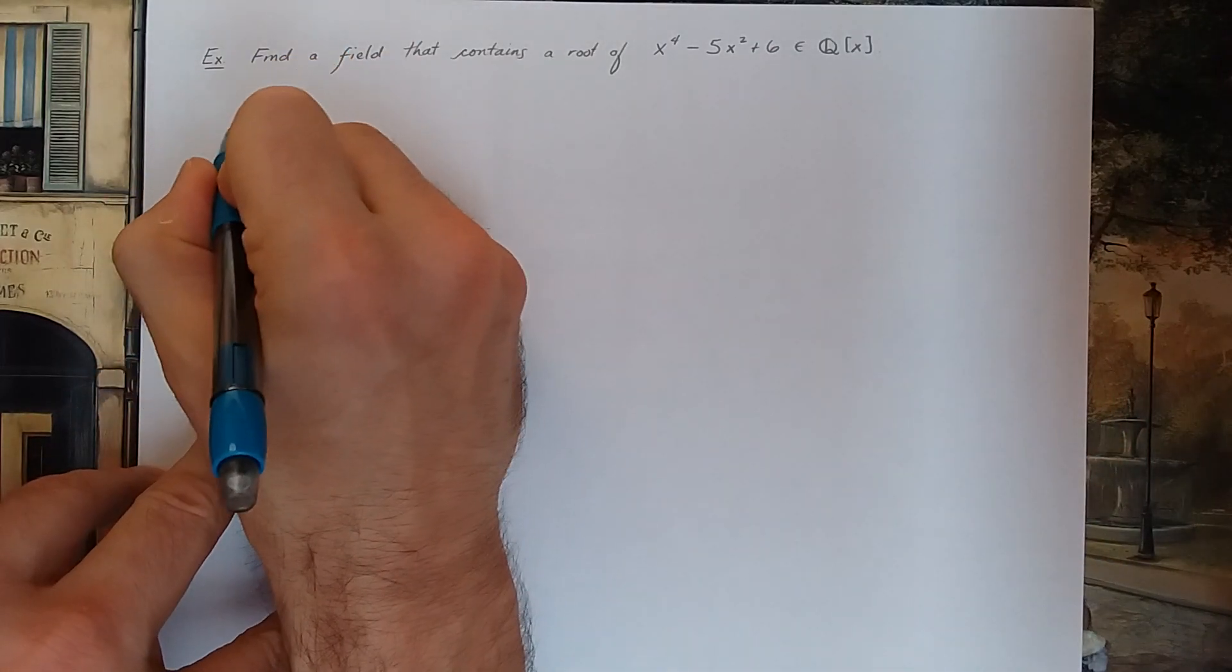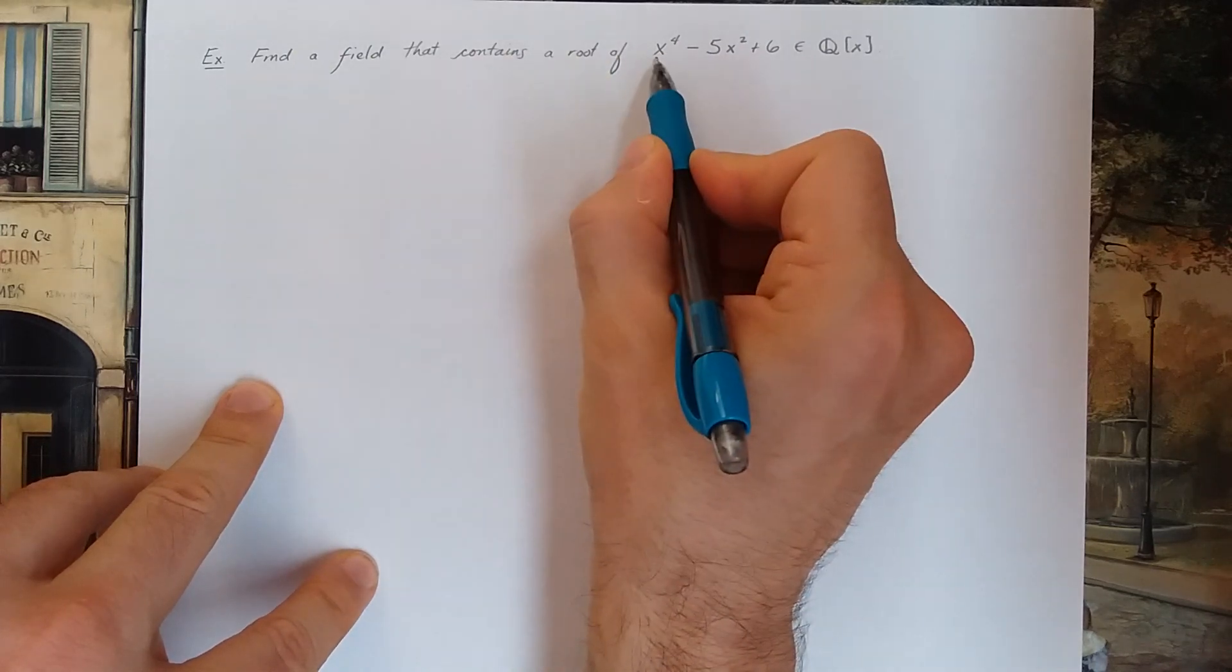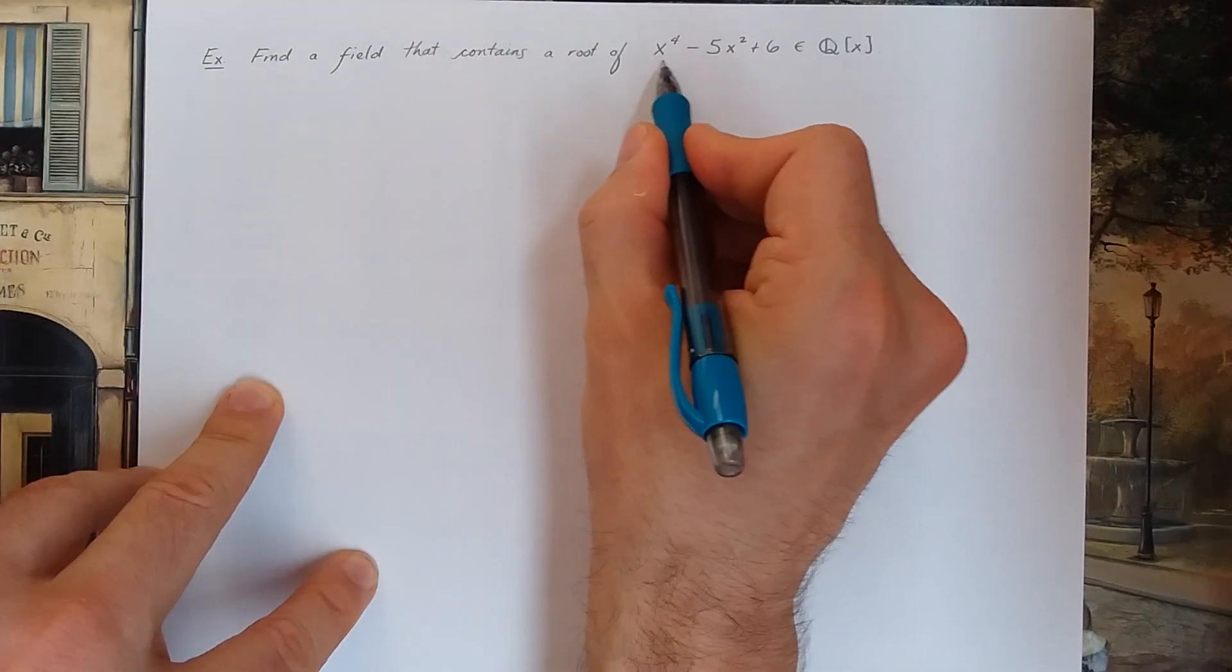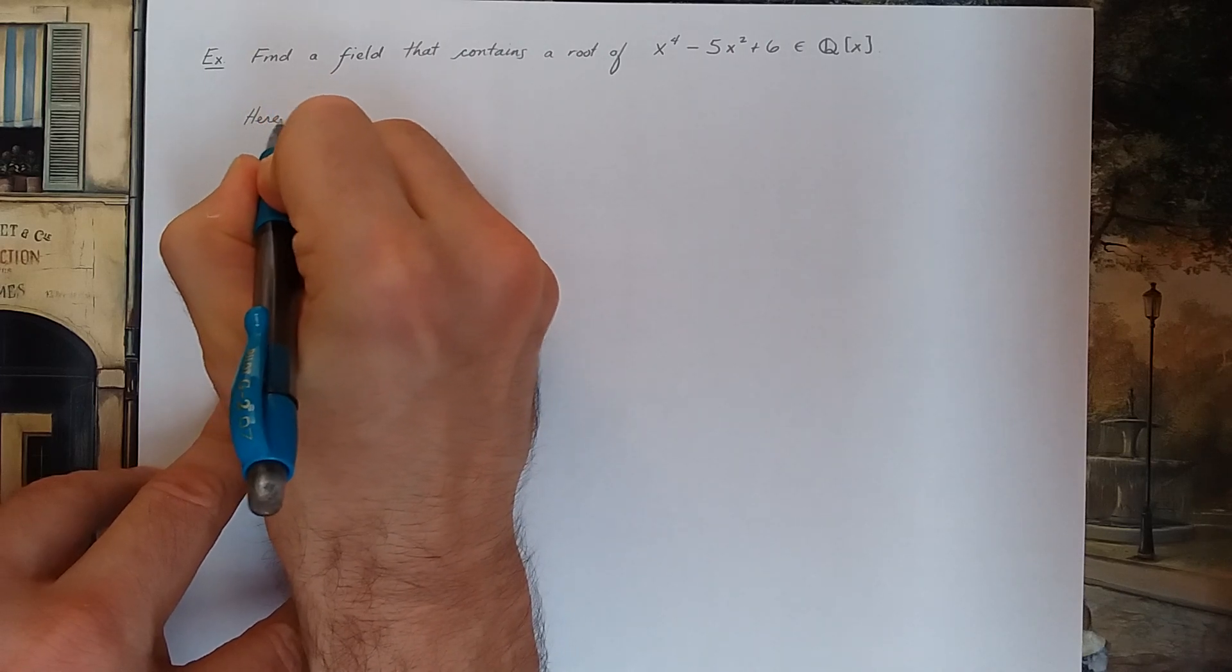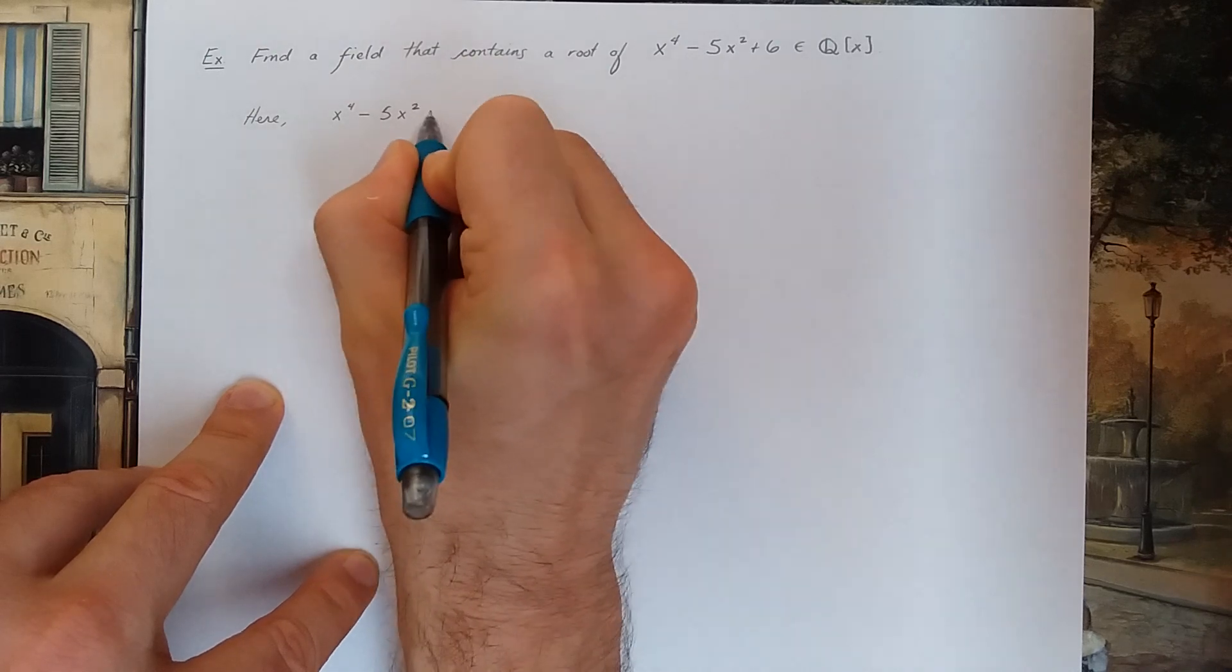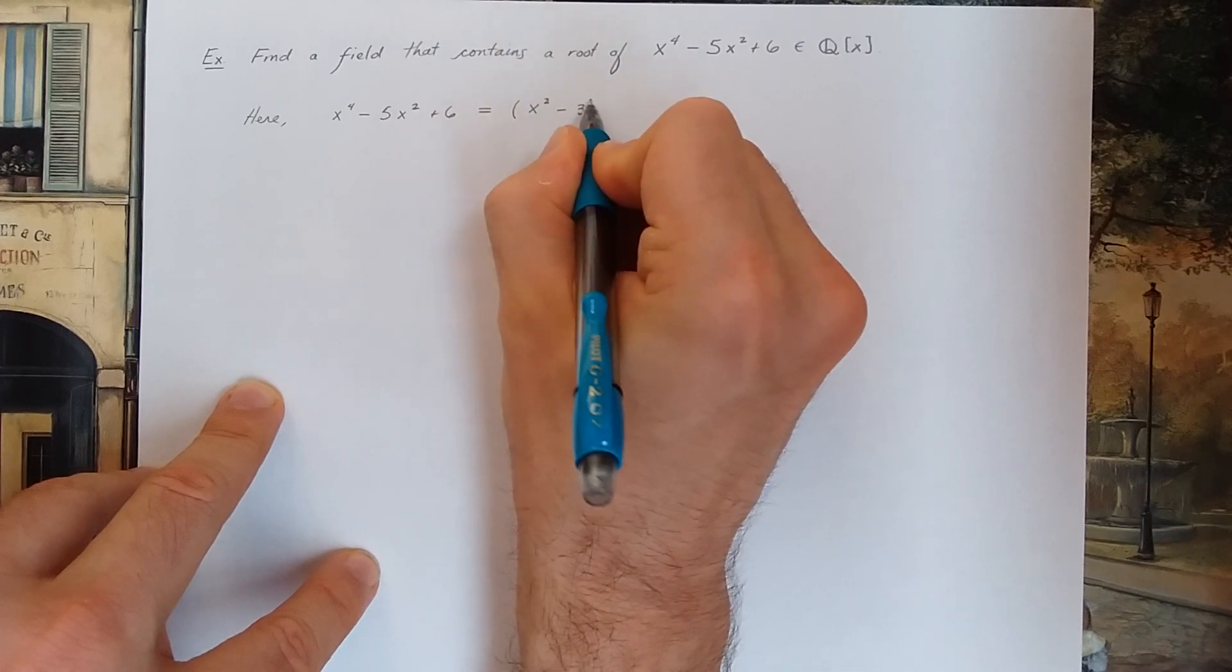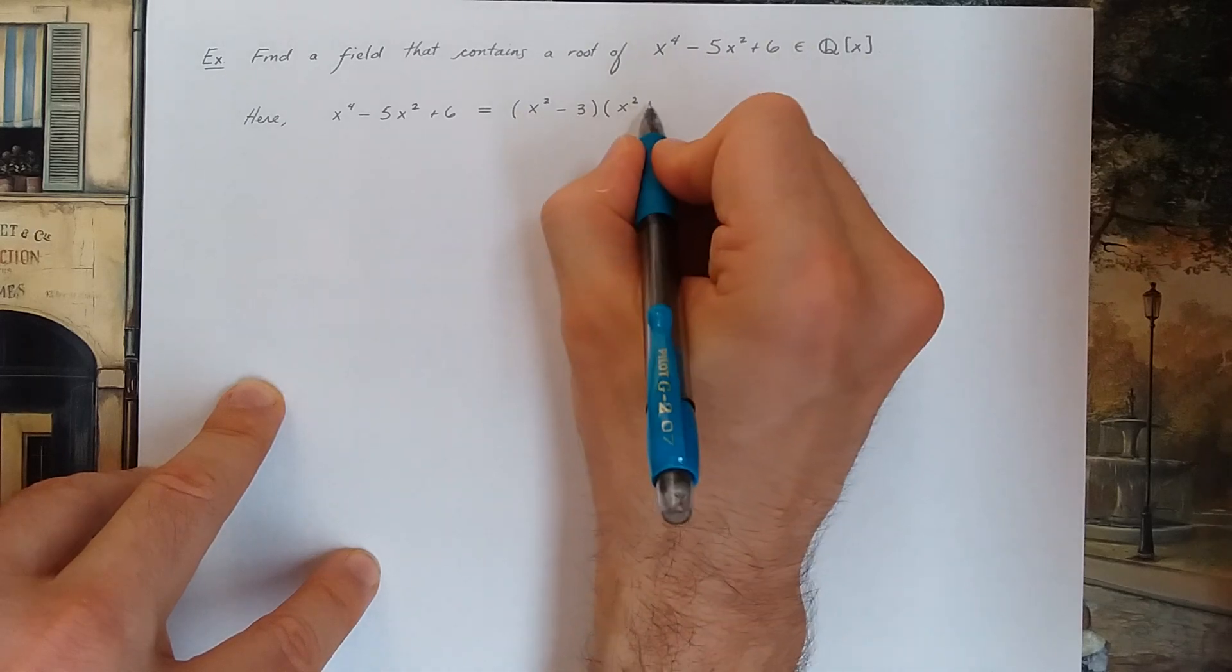So here's an example. How can I find a field that contains a root of this polynomial over the rationals? Well the first thing I'd notice is that this polynomial is reducible. Here we have the polynomial x to the fourth minus 5x squared plus 6 can be factored into irreducible components x squared minus 3 times x squared minus 2.